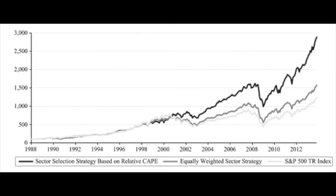There is also an ETF that uses the CAPE ratio and rebalances across sectors, and it has outperformed very significantly both the equally weighted sector strategy and the S&P 500. So the CAPE really, really works.